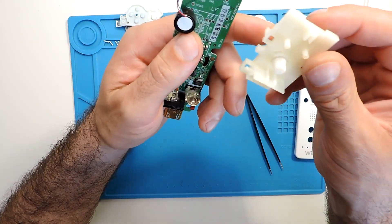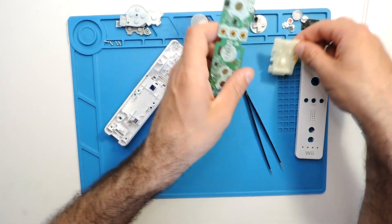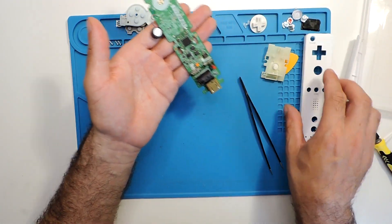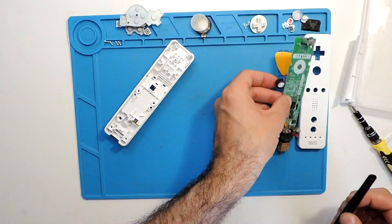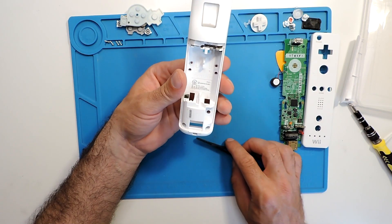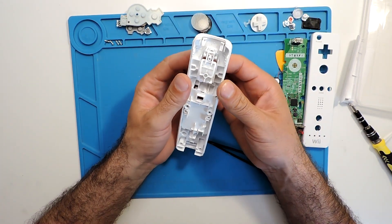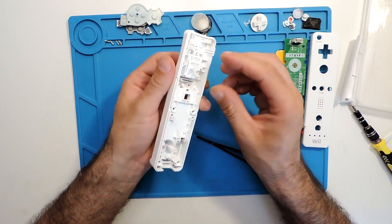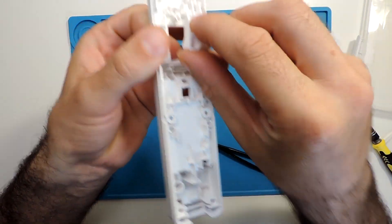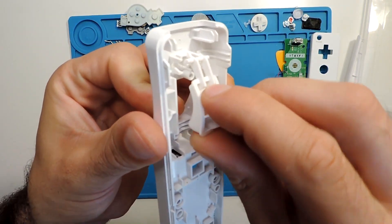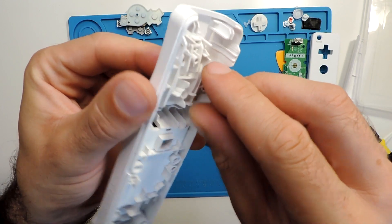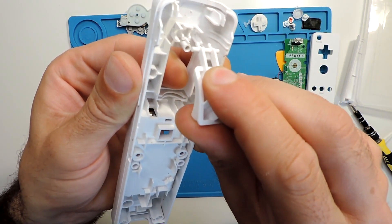What else you can take out is the B button in the back. You can just pull it up. You can see it just fits there, so you just pull it out and that's it.